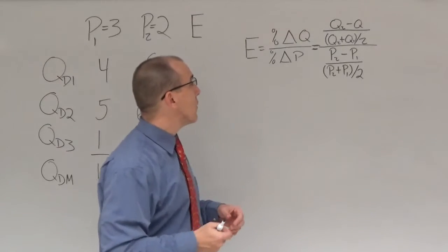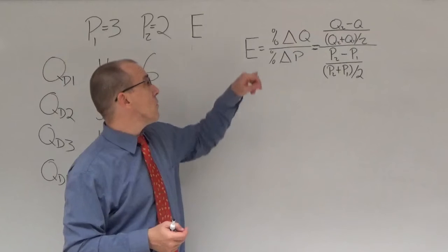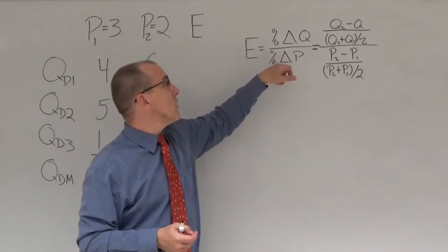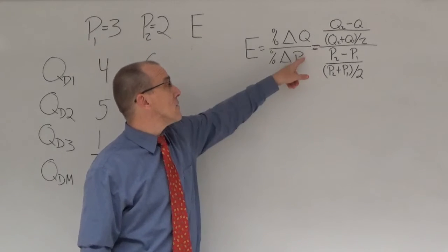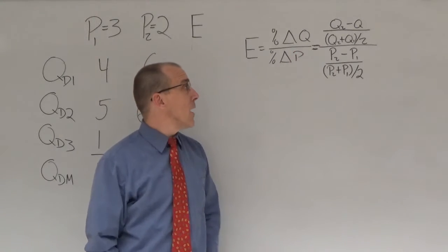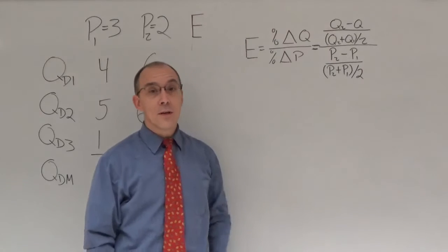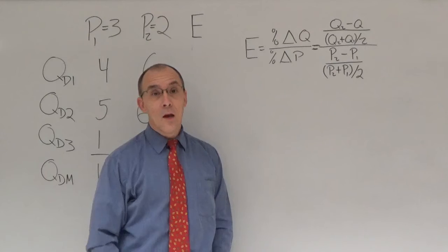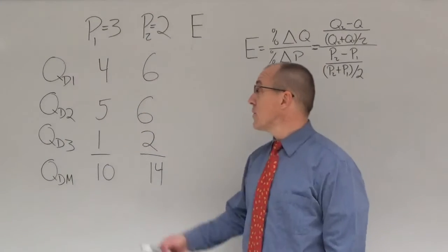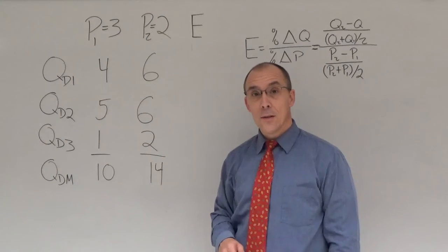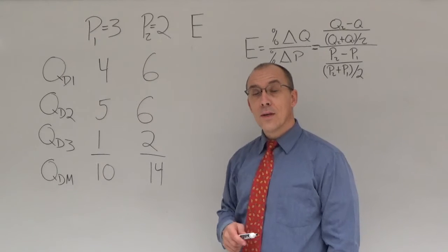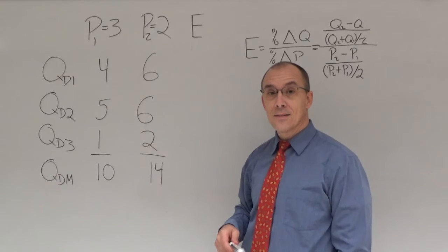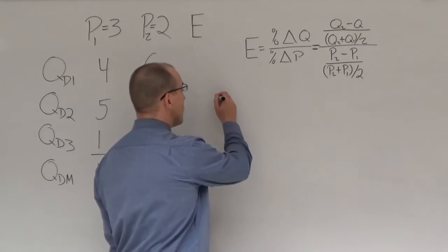Now we're going to look at elasticities. Elasticity is a little bit complicated but not a hard problem. What we're looking at is the change in quantity demanded over the change in price — the responsiveness of quantity to price. This is the formula we can use to basically plug and chug through the information to get our elasticities.